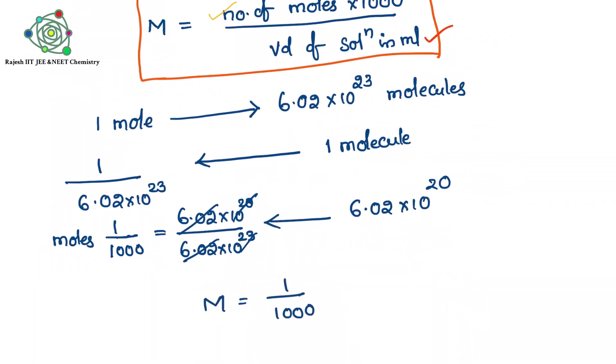So therefore, this 1 by 1000 moles, we have to substitute in the above formula. So you got moles, how many? 1 by 1000. So here use 1 by 1000 into 1000 by 100. 1000, 1000 get cancelled. 1 by 100. That is 0.01M. This is the answer.